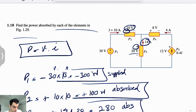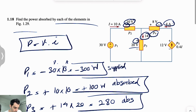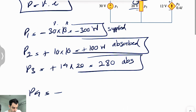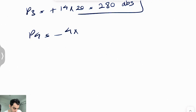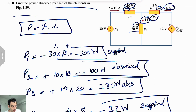For P4, if we look at it, we can see the current is entering the negative pole, so we have negative 4 amps times 8 volts, which gives us minus 32 watts. That shows that the power is supplied here.